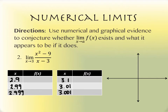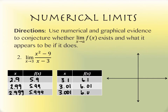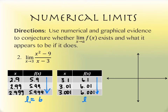The table gives us y-values of 5.9, 5.99, and 5.999 from the left side, and 6.1, 6.01, and 6.001 from the right side. Looking at the first column, those values appear to be approaching 6. Looking at the second column, they also appear to be approaching 6. So from a numerical standpoint, this limit appears to be 6.